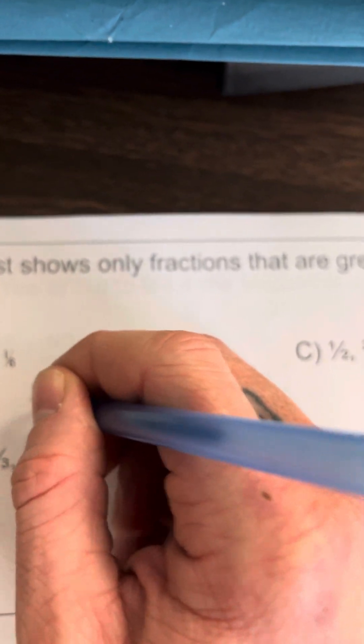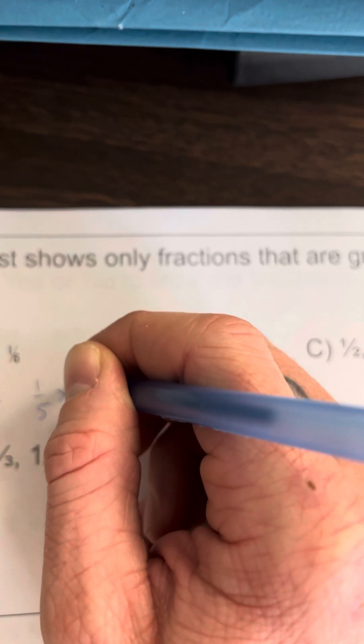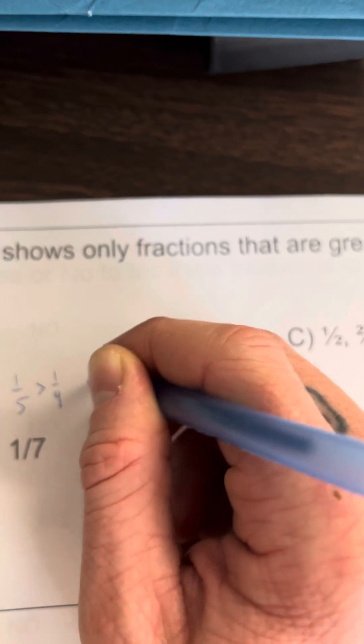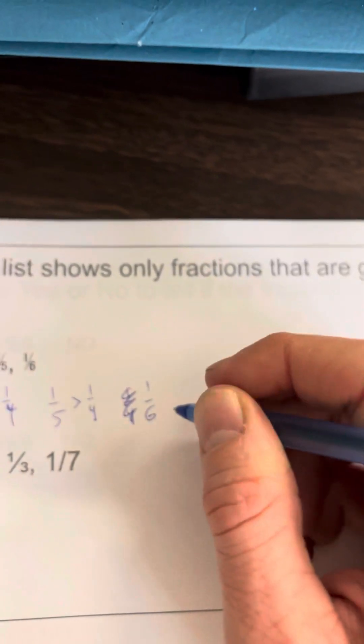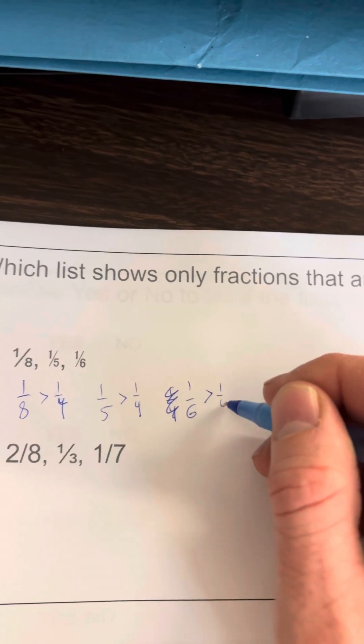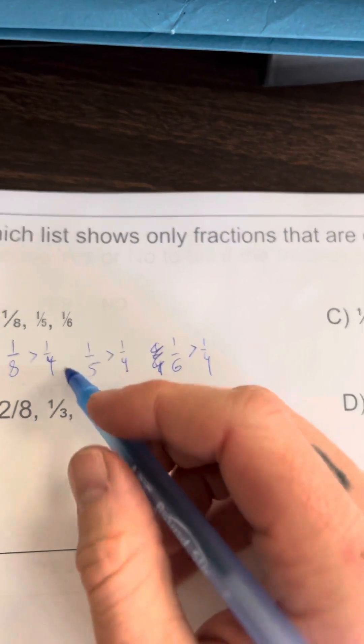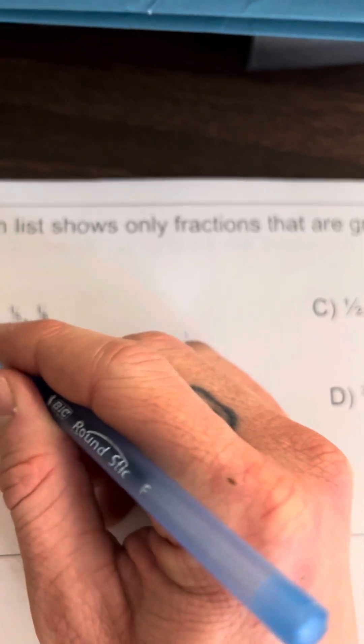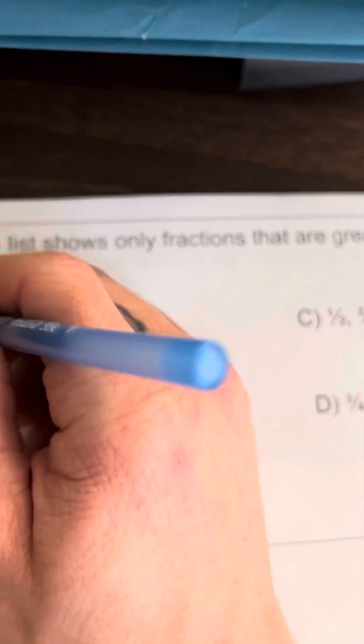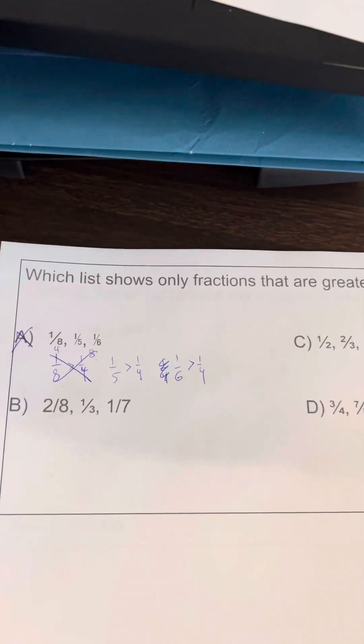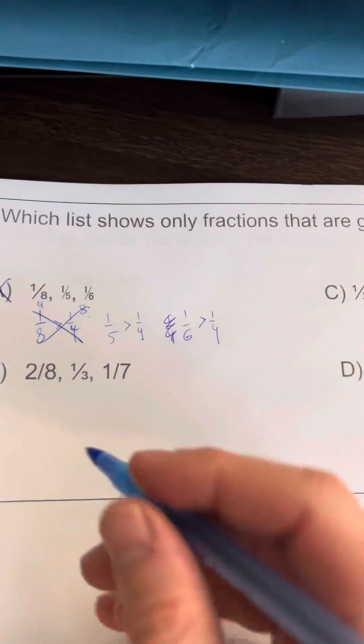Let's check all the ones in A. Is one-eighth bigger than one-fourth? It's not. This four is not bigger than this eight, so right away I know A is not right because I need all of them to be bigger than one-fourth.